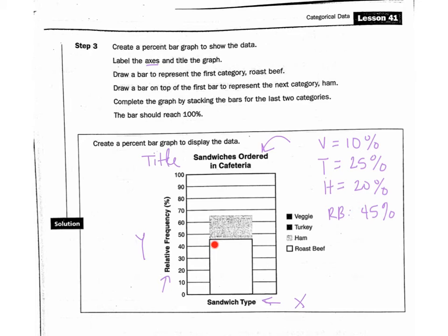We're going to draw a bar on the first graph to represent the first category, roast beef. You can see they left it like that. Then they're going to draw a bar on top to represent ham. As you can see, they went 20 there, 20 percent. Now we need to finish it by stacking the last two on it. So we've done ham, we've done roast beef, so I'm going to do turkey next, which would be about 25.